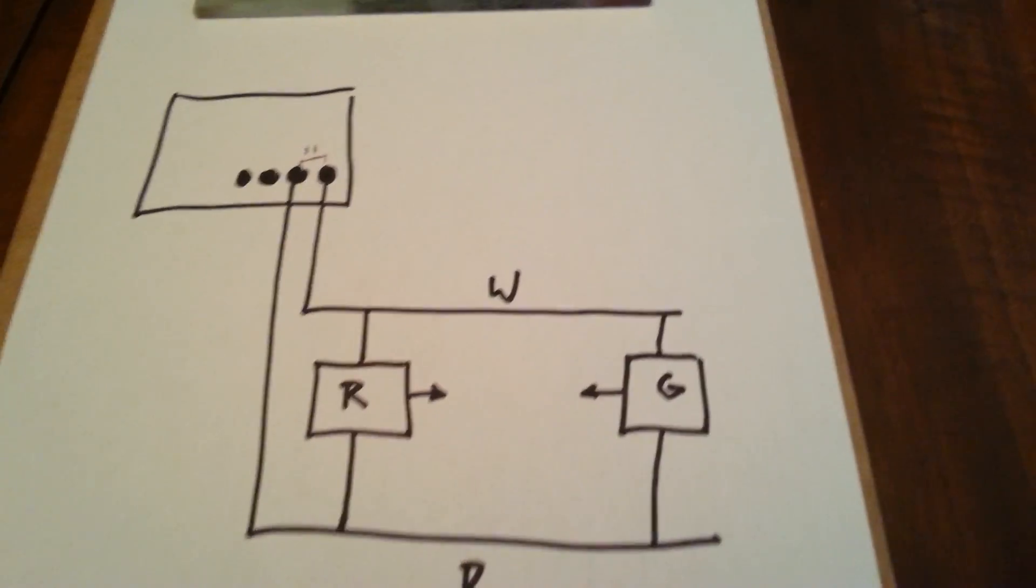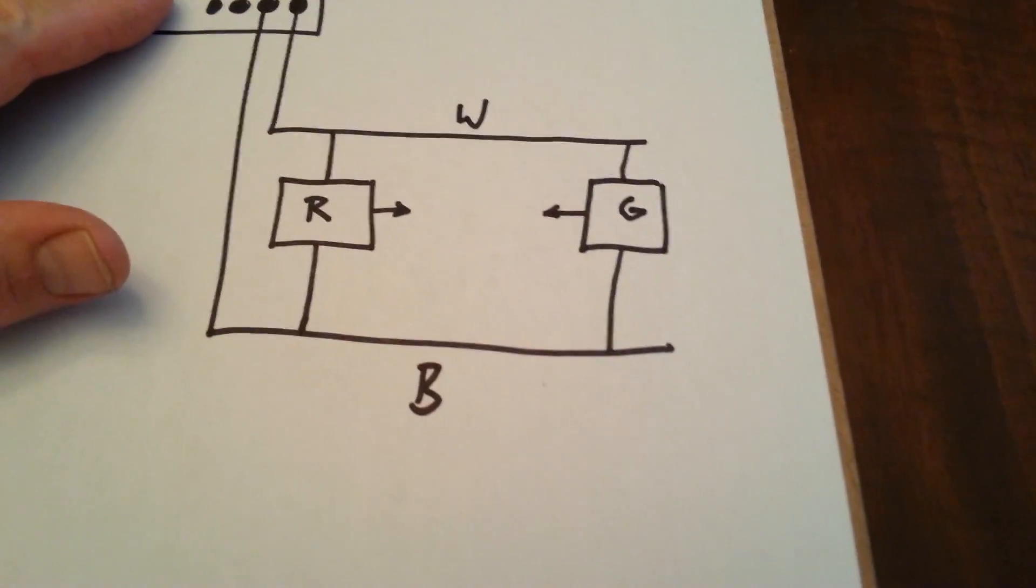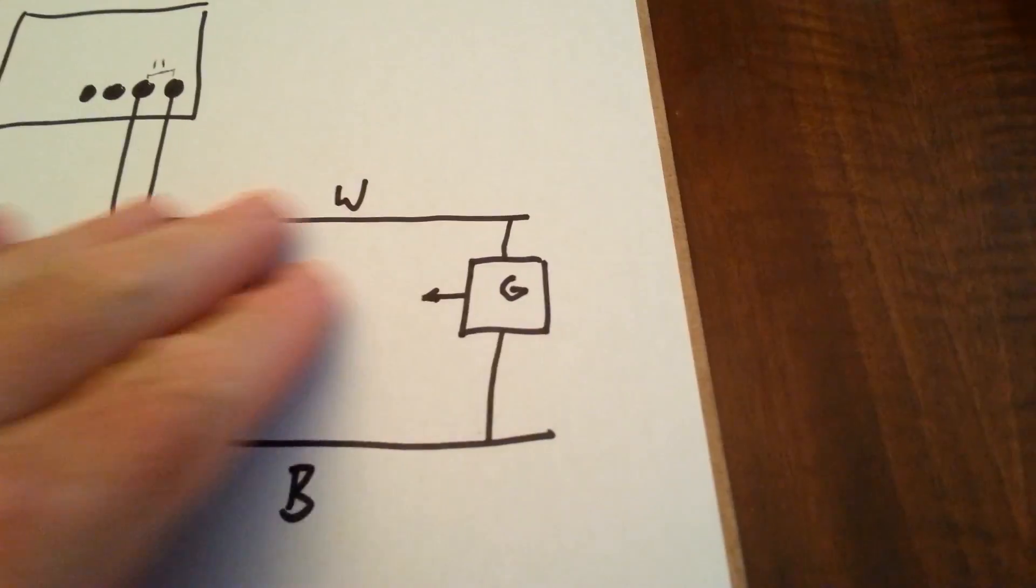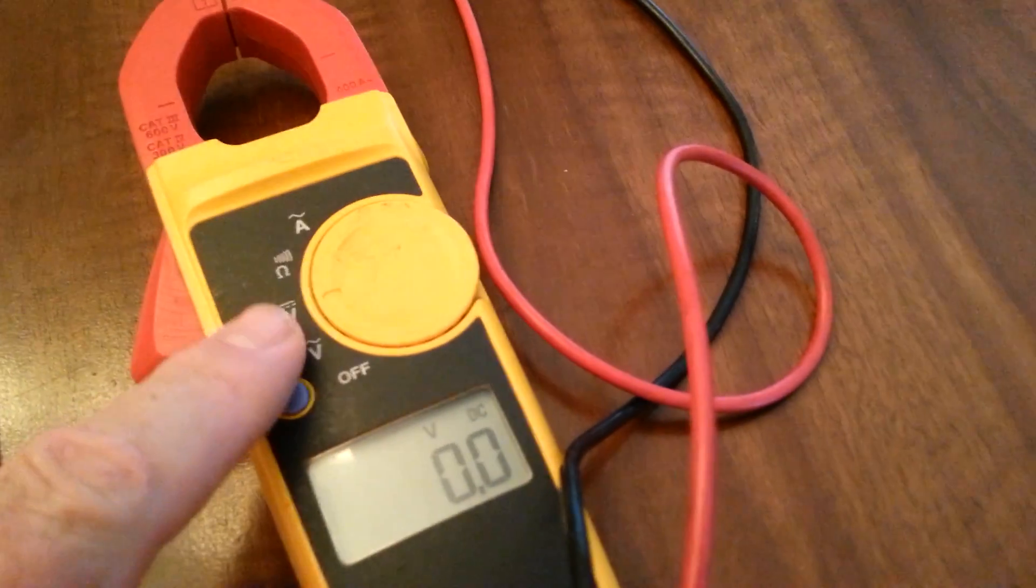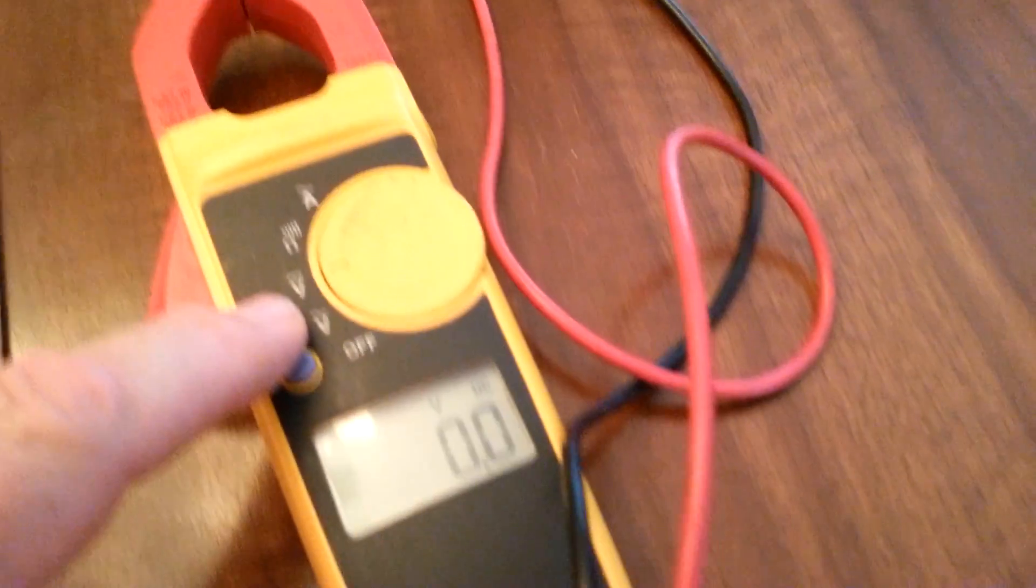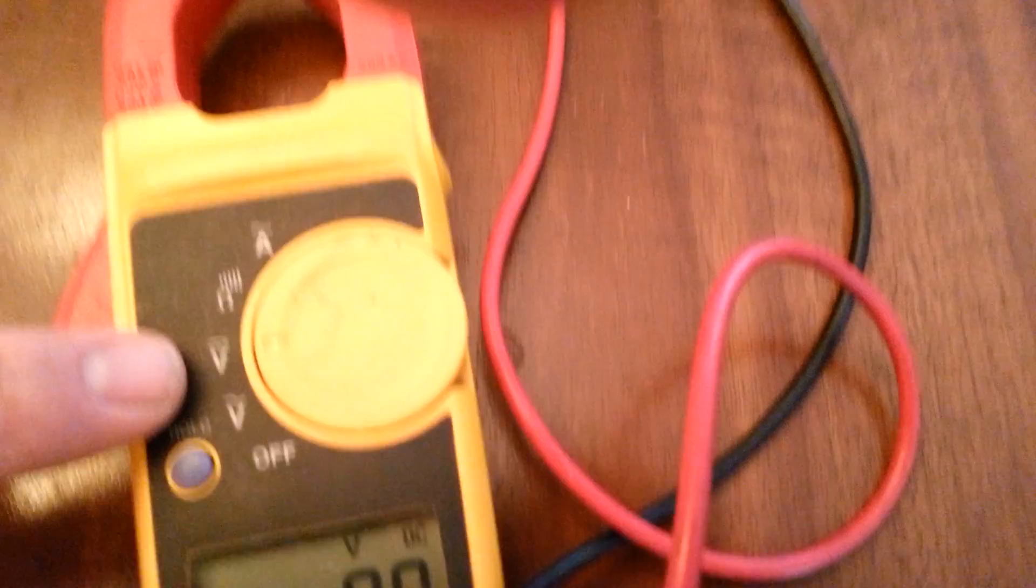I'm going to get a little technical about a garage door opener, specifically how the sensor works. I'm using a meter, a Fluke meter with auto-ranging set to volts DC. That's the V with the straight line across it.